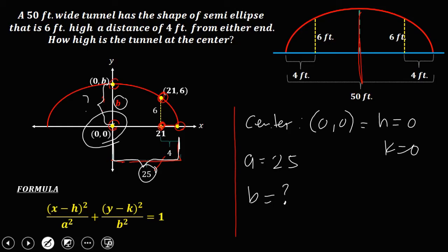Then for x and y, we're going to use these coordinates, so x is 21, and y is positive 6. So these are the values we're going to use to solve this problem using this formula.